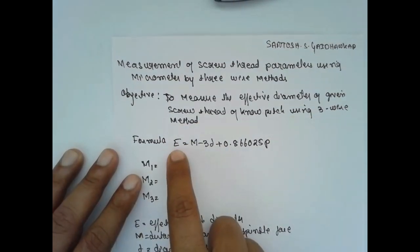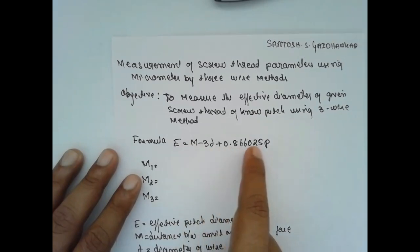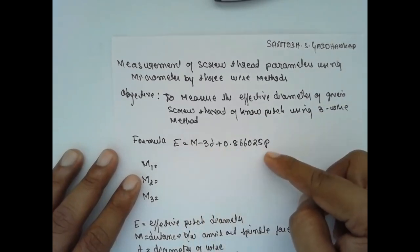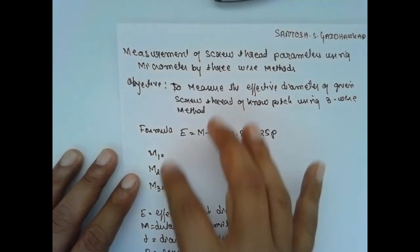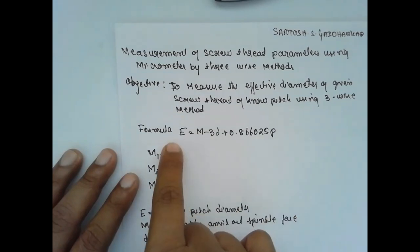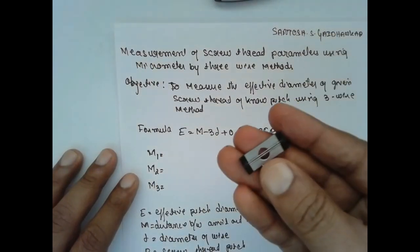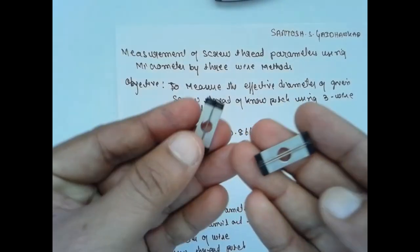Formula: E equals M minus 3d plus 0.866025p, where p is the pitch. You have to find out m1, m2, and m3 values, take the mean value, and substitute in this formula. This is the three-wire method - one, two, three wires here, therefore we call it the three-wire method.